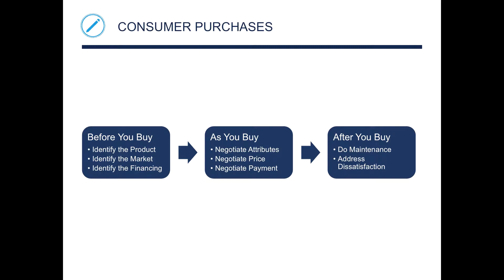There seems to be a bit of a process — it's not just you running, grabbing, and buying. The book identifies three steps of consumer purchases. Before you buy, you identify the product, identify the market, and the financing, if applicable.